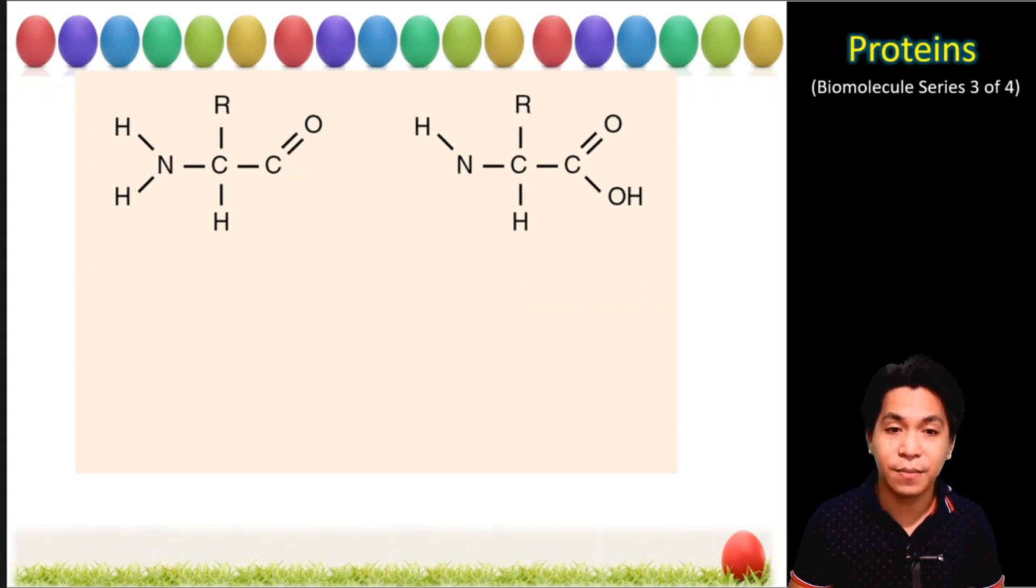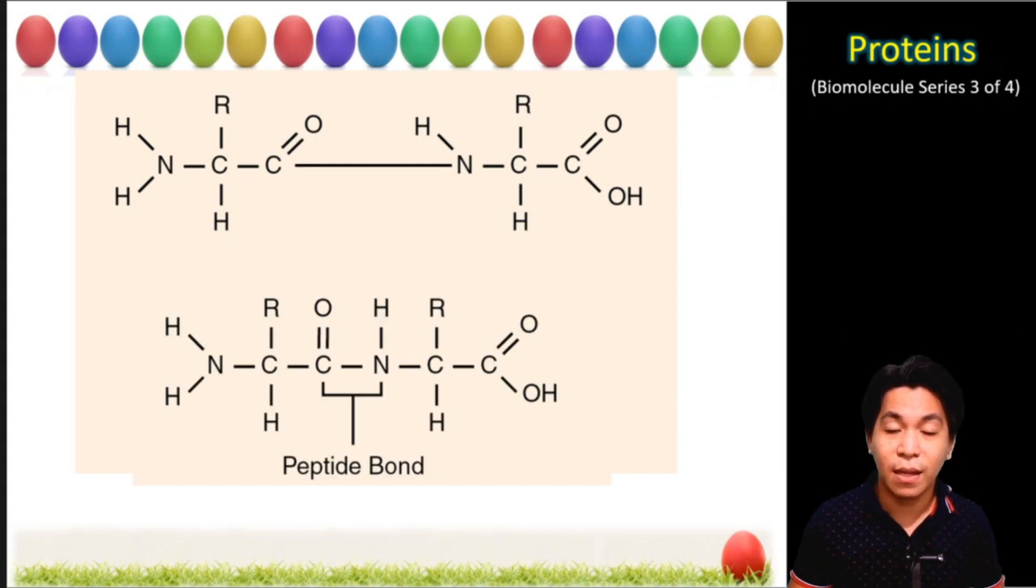It will be expelled and what will happen is the carbon loses one bond and so as the nitrogen. So in order to complete their bonds, they will link together and that linkage is what we call peptide bond. So in our example, when we combine two amino acids, we form one peptide bond.